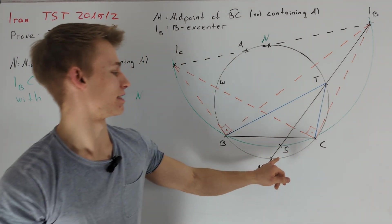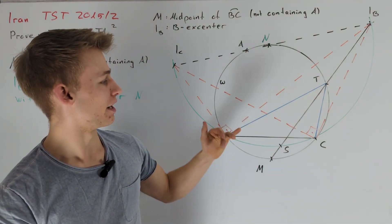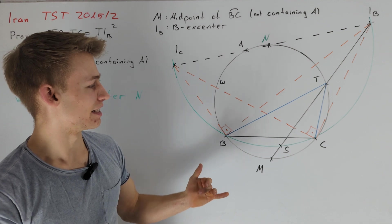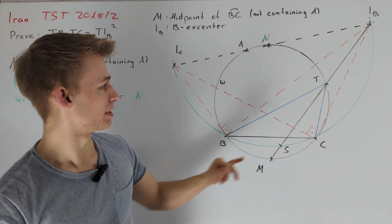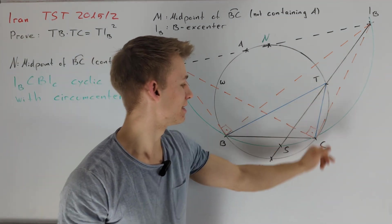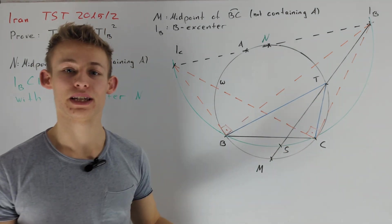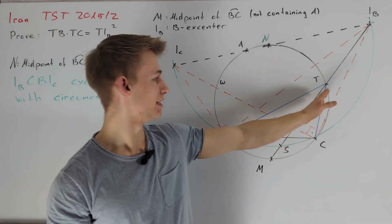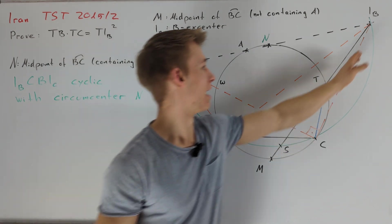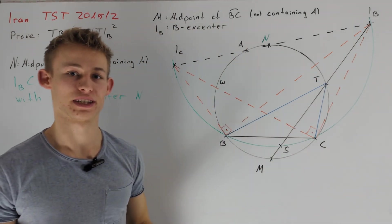I want to call this second intersection point here S and now our instinct tells us that it actually should be true that TB times TC is also equal to TS squared. This would be equivalent to the fact that T is the midpoint of SIB and we can indeed prove that this is true.